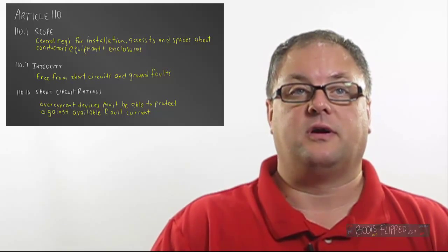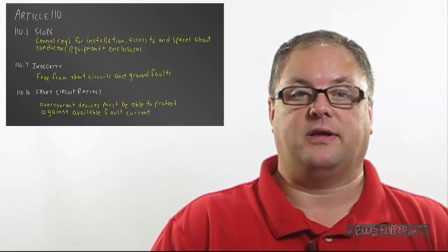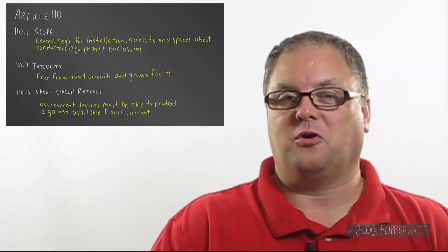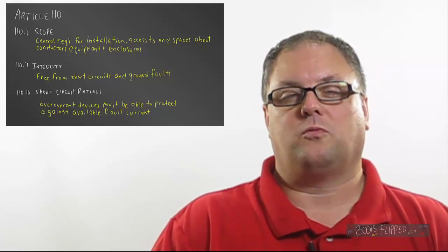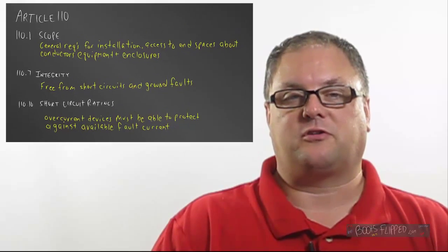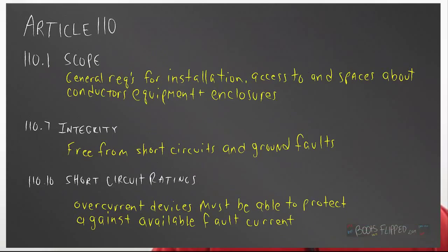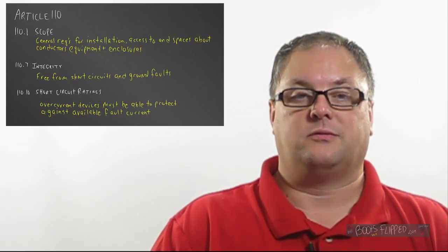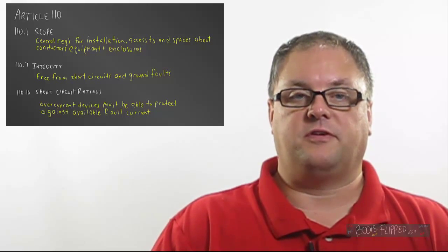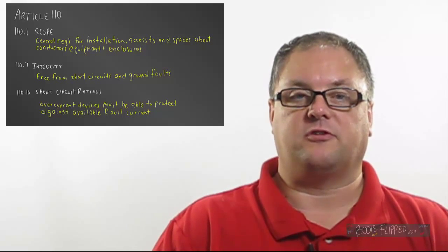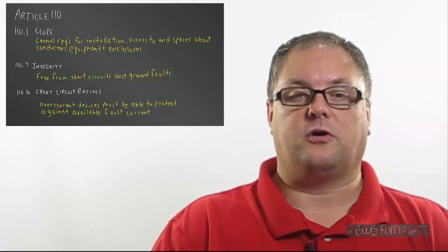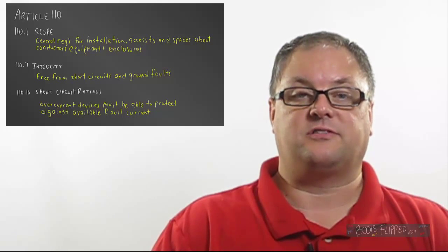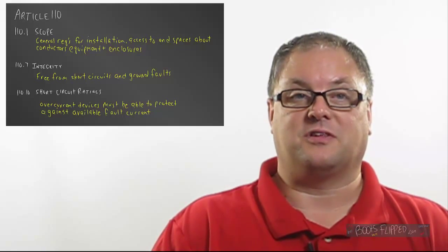Article 110.7 talks about Integrity. Well, what is Integrity? That is doing what is right even though nobody's looking. So what that would involve with electrical work would be free from short circuits and ground faults. I used to work for a company that would just leave that stuff. You'd finish a house, turn on the breakers, everything that tripped, you just left off. According to the code, you can't do that. Well, Article 110.7. Remember that next time you have somebody working with you that wants to leave it.